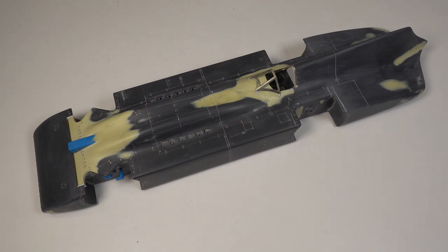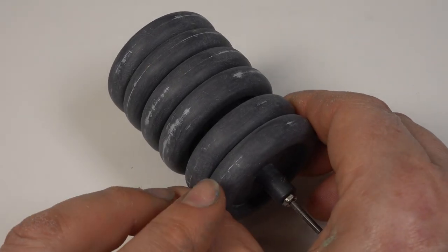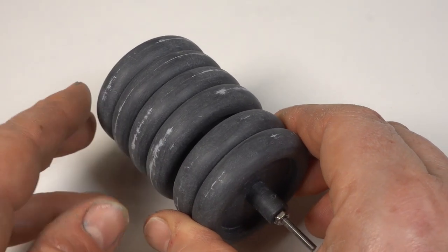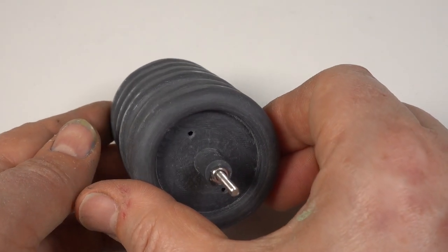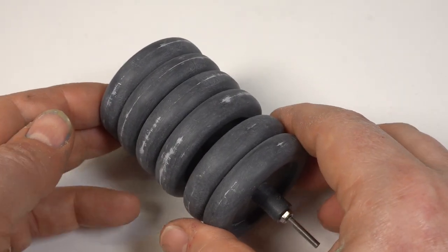To give the model some weight I bolted the wheels together and filed a flat across the set of six tyres. These flats were then blended in to avoid any hard edges.